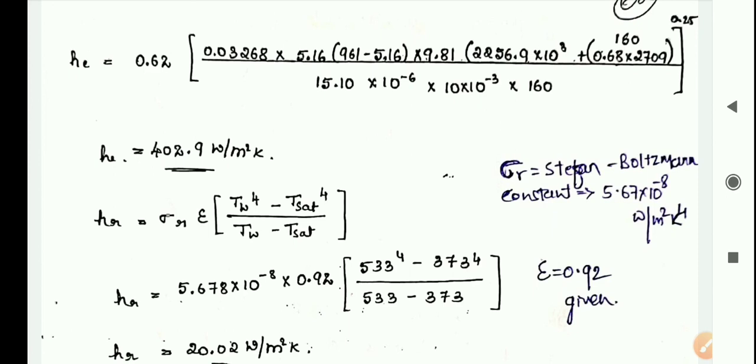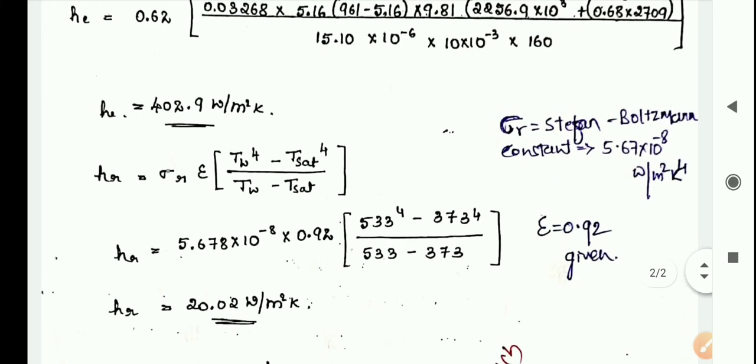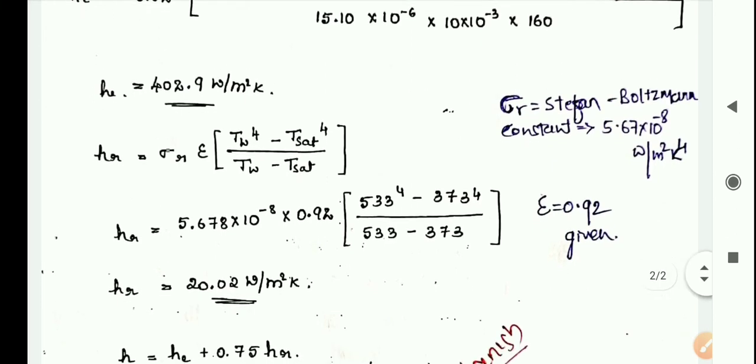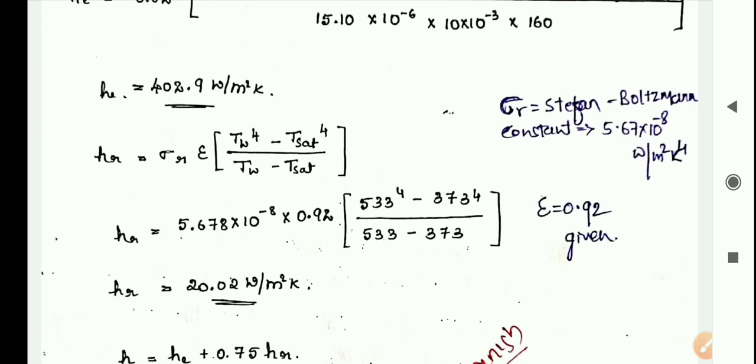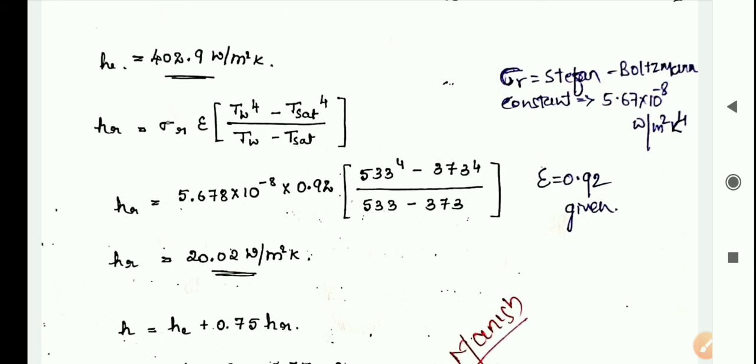Emissivity is given in the problem as 0.92. Substitute all the values. Tw is the temperature, 260 degrees, which is 260 plus 273 equals 533 Kelvin. So 533 raised to 4 minus 373 (which is 100 degrees Celsius) raised to 4, divided by 533 minus 373. hr you will get around 20.9 Watt per meter square Kelvin.